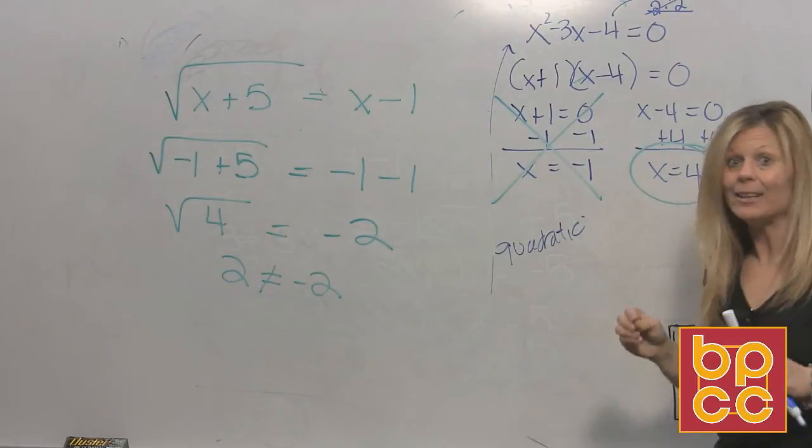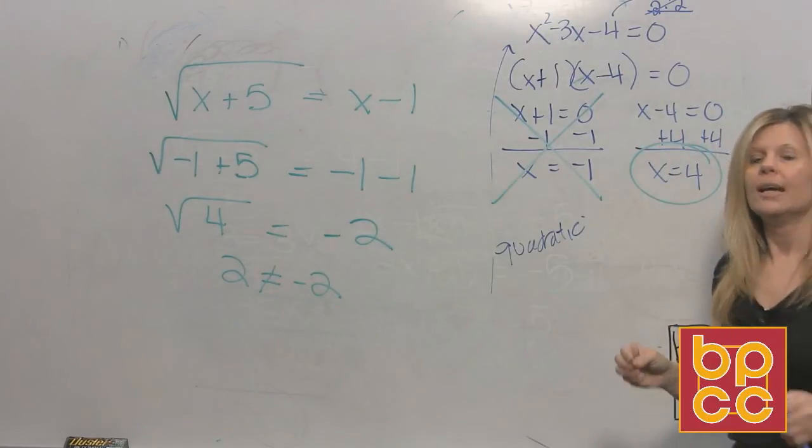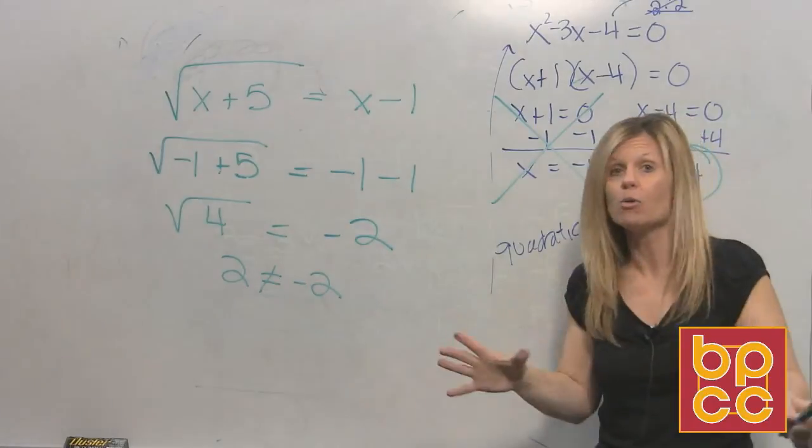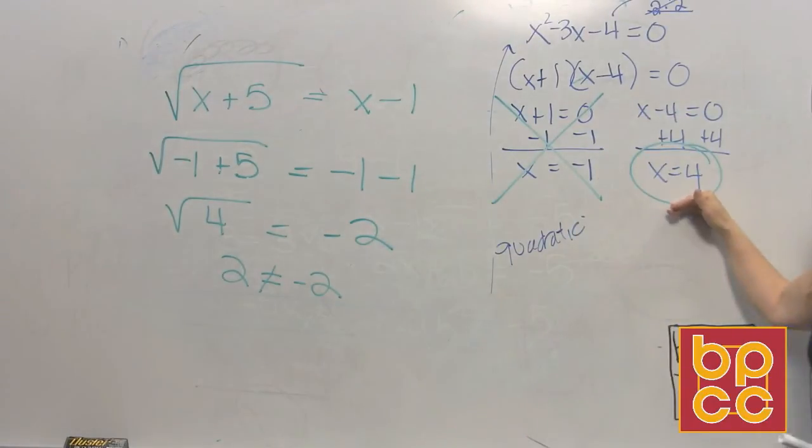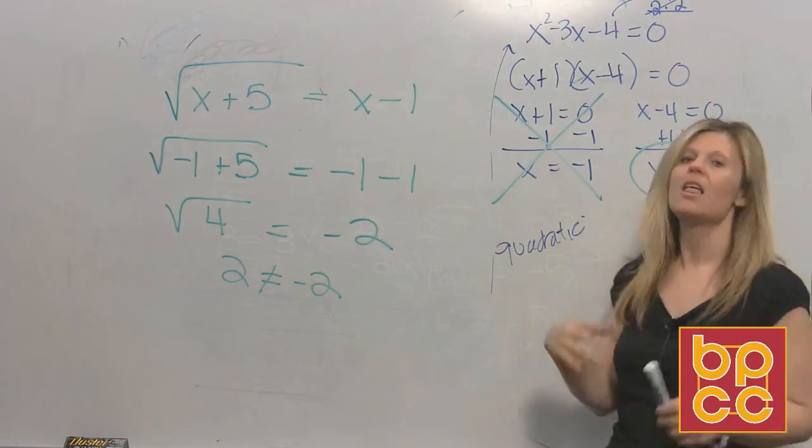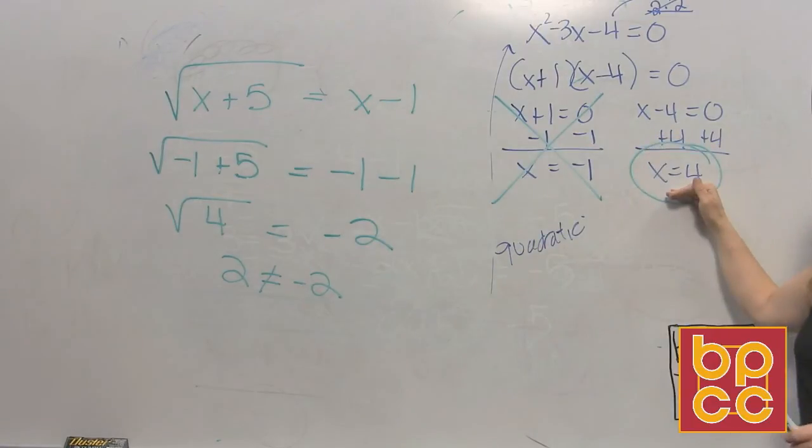Now, do not say no solution. No solution means you have no number that checks. Do you have a number that works? You do. Your solution is x equals four. If that one didn't check and we had nothing, then we would say no solution. But we do have an answer. So the solution here is x equals four.